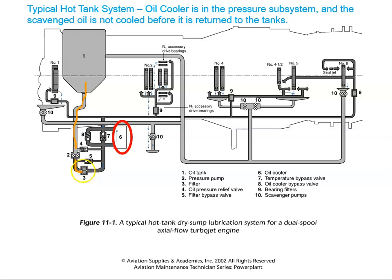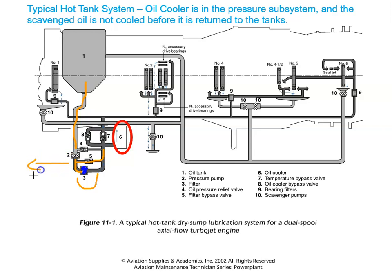Now what we need to be careful of is if the filter became clogged — if it got a lot of debris in here, for example, then the oil wouldn't be able to get through. So there is a filter bypass valve across the filter. If it gets clogged, the pressure drop across here will be high and that will allow this valve to open so the oil could bypass the filter. Now that means there is dirty oil going to the bearings, which is not ideal, but it's better than no oil going at all. So when this filter opens, a warning will go off in the cockpit saying the filter bypass valve is open and land immediately.